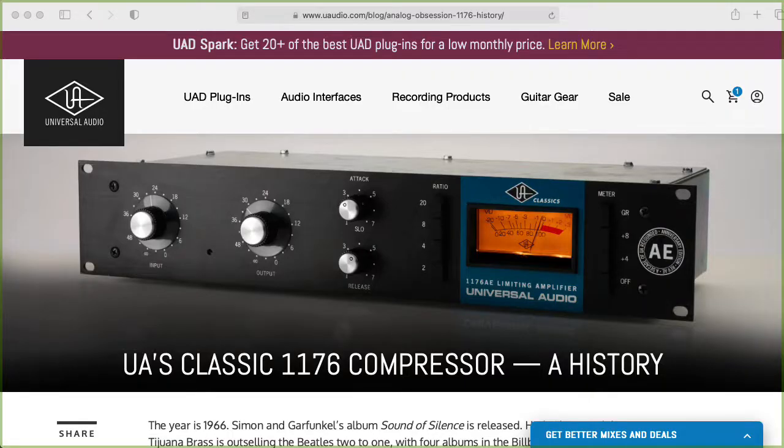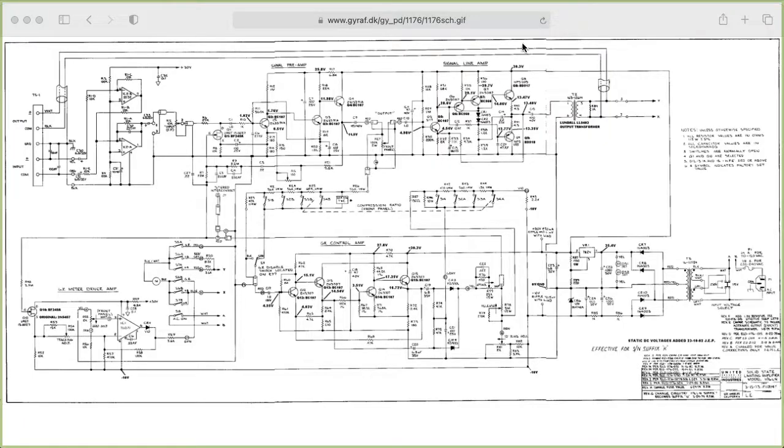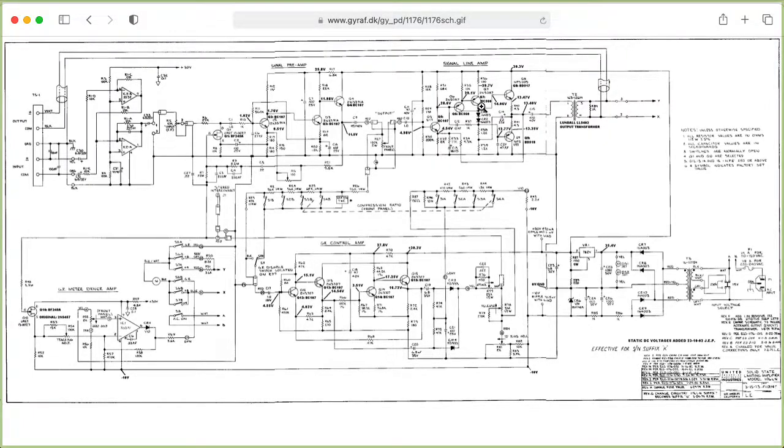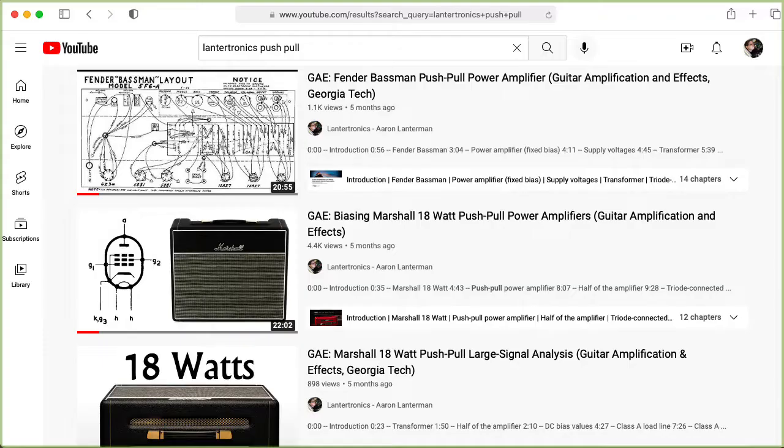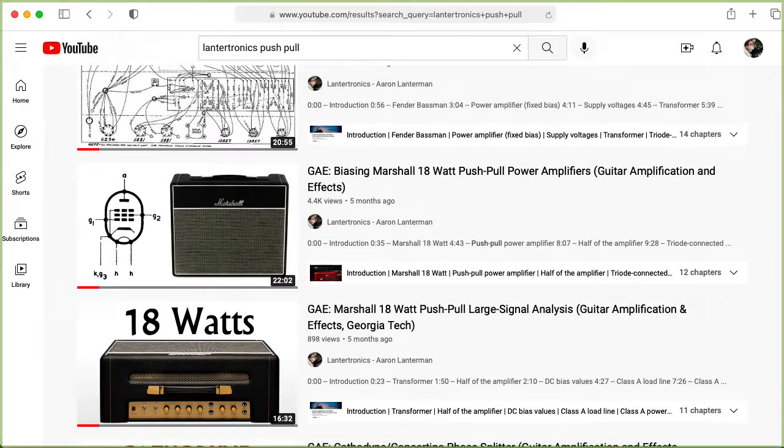This is Universal Audio's 1176 limiting amplifier. It's designed to compress the dynamic range of an audio signal. This is the schematic of one of the versions of the 1176. And if you look at the output circuitry, you'll see that the output transformer is driven by a push-pull output stage. But instead of a VBE multiplier, a couple of diodes are used to bias the bases of the transistors in the push-pull output stage to make sure they're operating in a class AB mode.